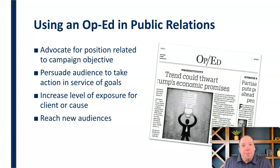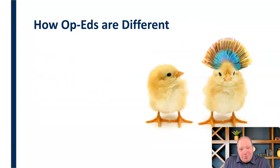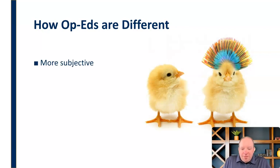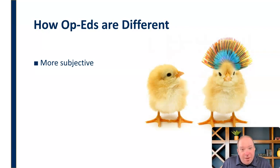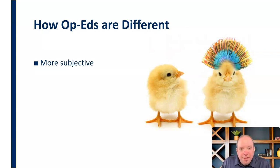So how are op-eds different from hard news or feature articles? Well, op-eds are more subjective — they are opinionated, clearly driven toward a specific opinion. We don't have to put on the cloak of objectivity here. We can say, 'This is what I think, this is what I believe, and this is why I think you should believe and think and act in the same way.' We have that openness of subjectivity.